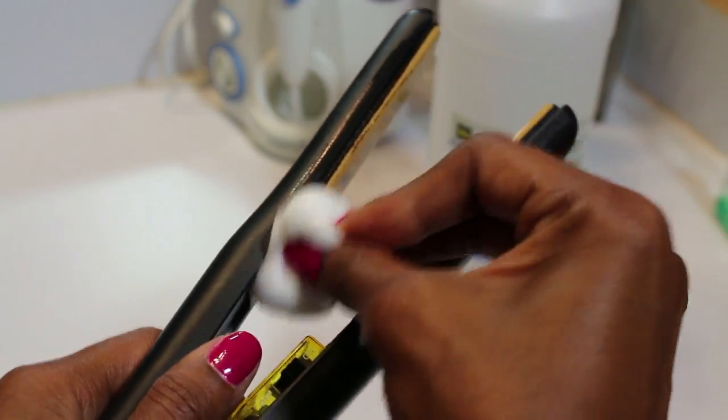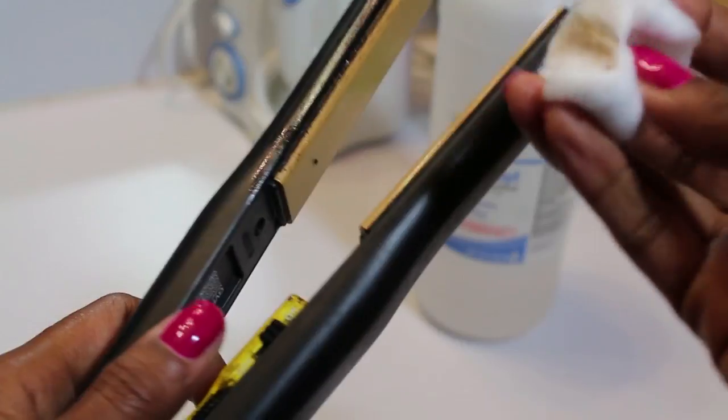If you need some more alcohol, you could just dab some more on there—on your Q-tip as well—to kind of get in those grooves. It's really good to clean your plates at least once a week. That's if you flat iron frequently.